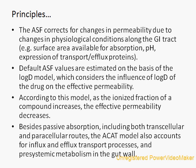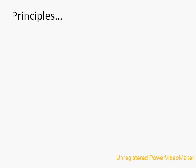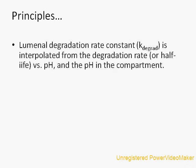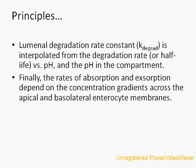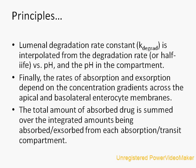Besides passive absorption including both transcellular and paracellular routes, the ACAT model also accounts for influx and efflux transport processes and pre-systemic metabolism in the gut wall. The luminal degradation rate constant is interpolated from a graph of degradation rate versus pH for the pH in each compartment. The rates of absorption and exsorption depend on concentration gradients across the apical and basolateral enterocyte membranes, and the total amount of absorbed drug is summed over the integrated amounts being absorbed from each absorption or transit compartment.